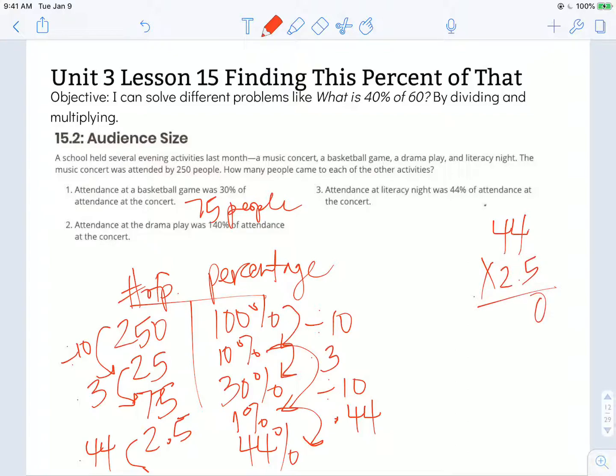So 44 times 2.5. 5 times 4 is 20. 5 times 4 is 20 again. With the 2 carried, that's 220. Put in a 0 to represent my place value. 2 times 4 is 8. 2 times 4 is 8 again. When I add those together, I have 0, 10, and 11.